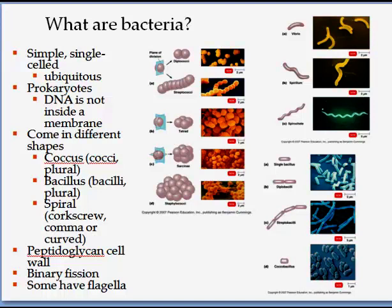Bacteria come in many shapes. The first kind are the cocci. Bacilli are the rods and spirals are the curved-looking bacteria.